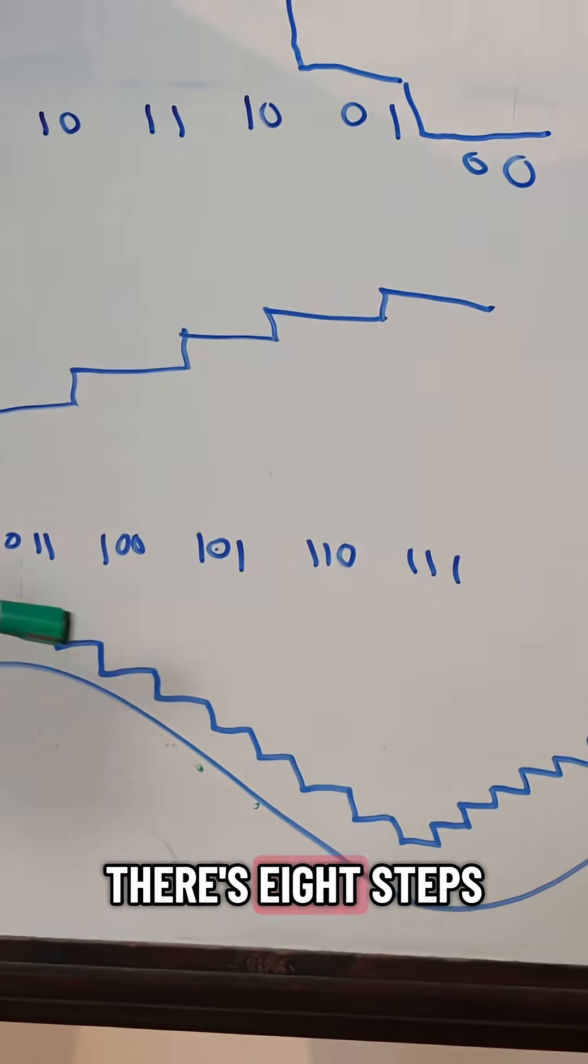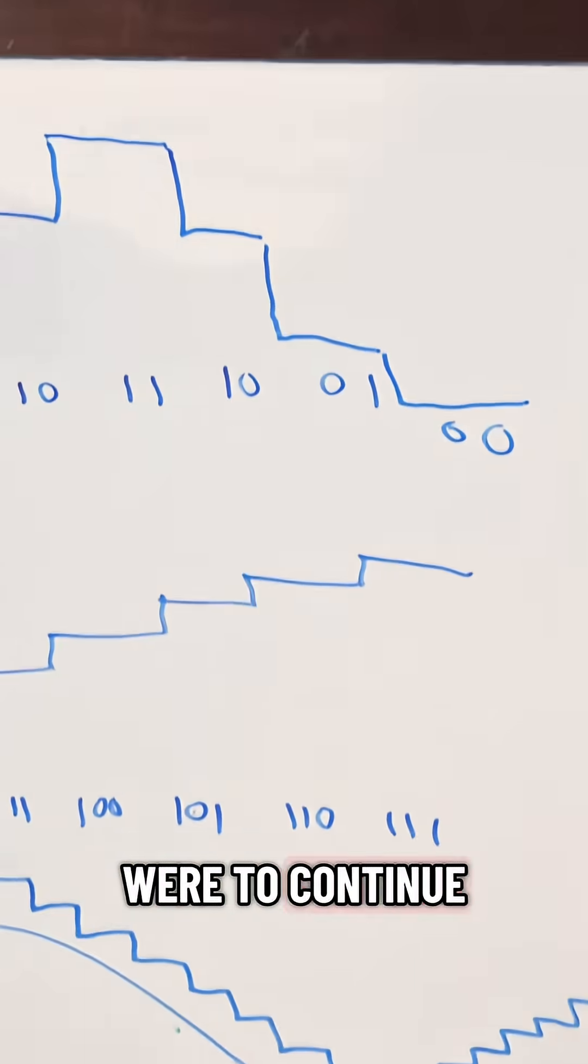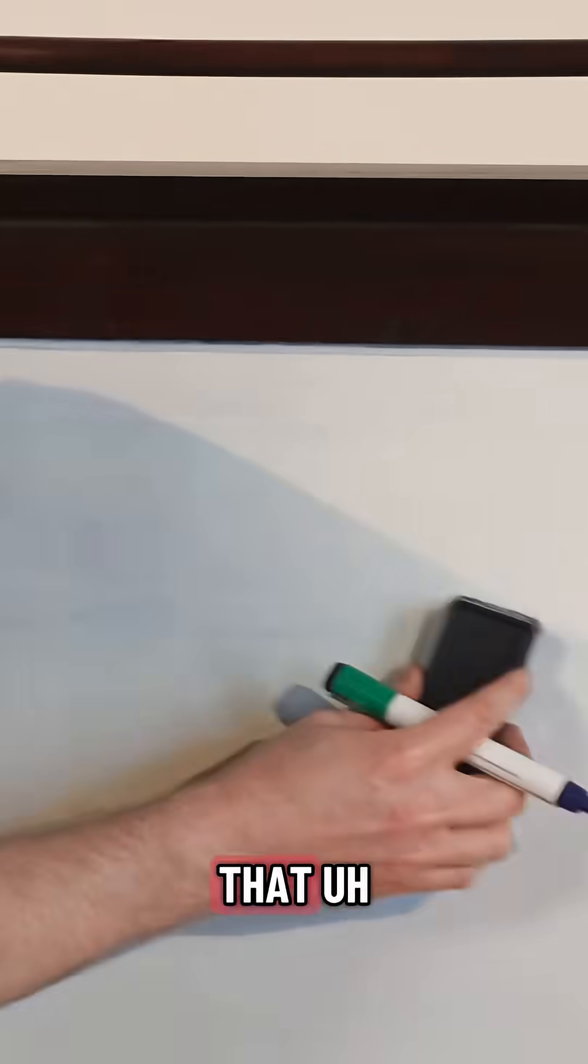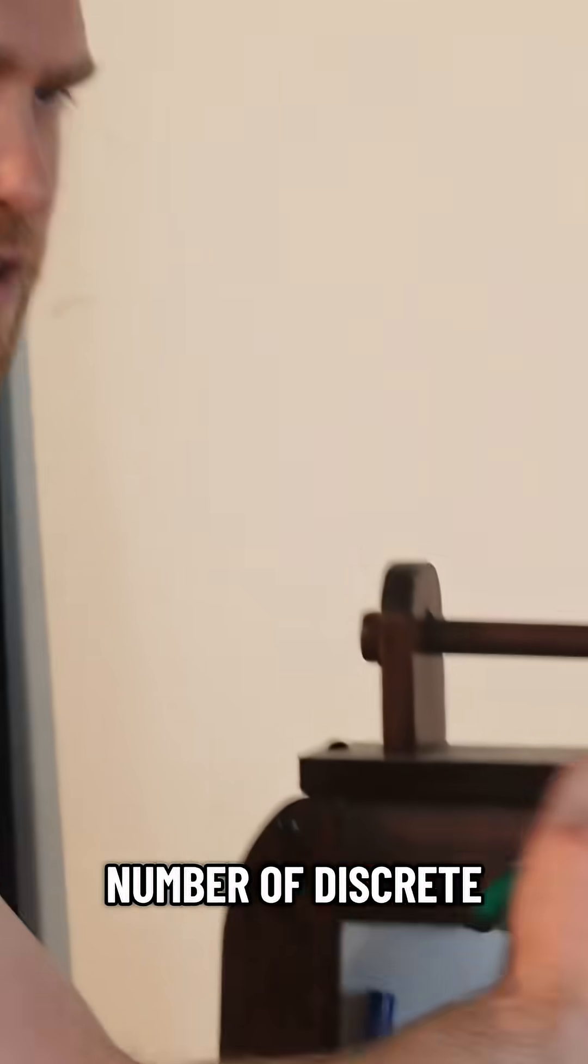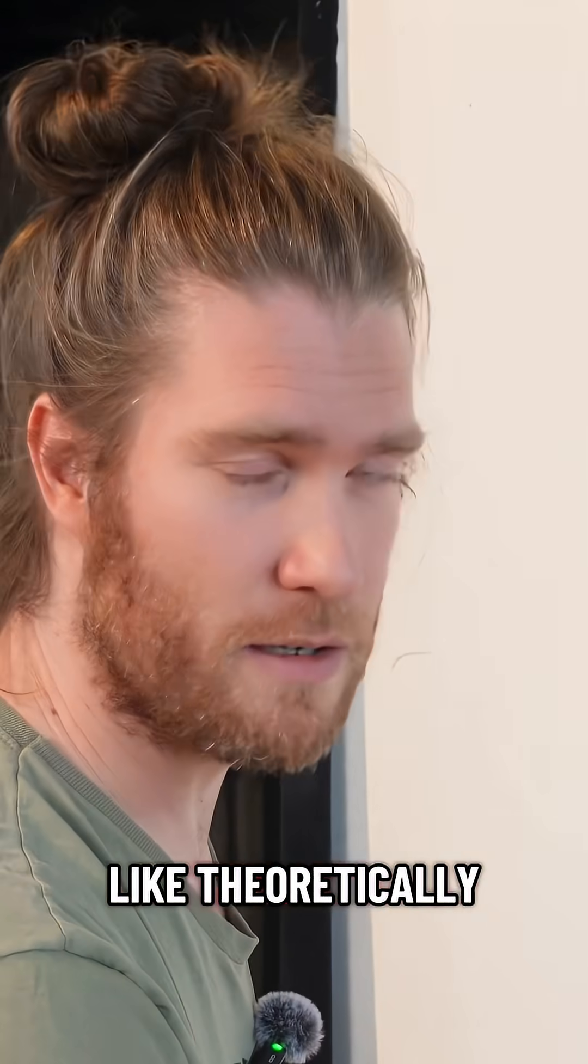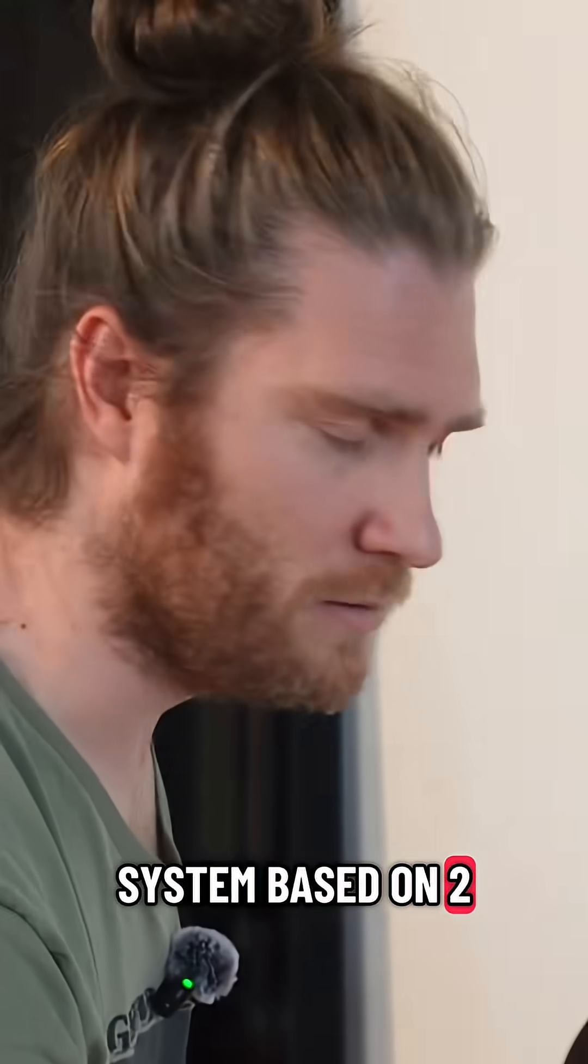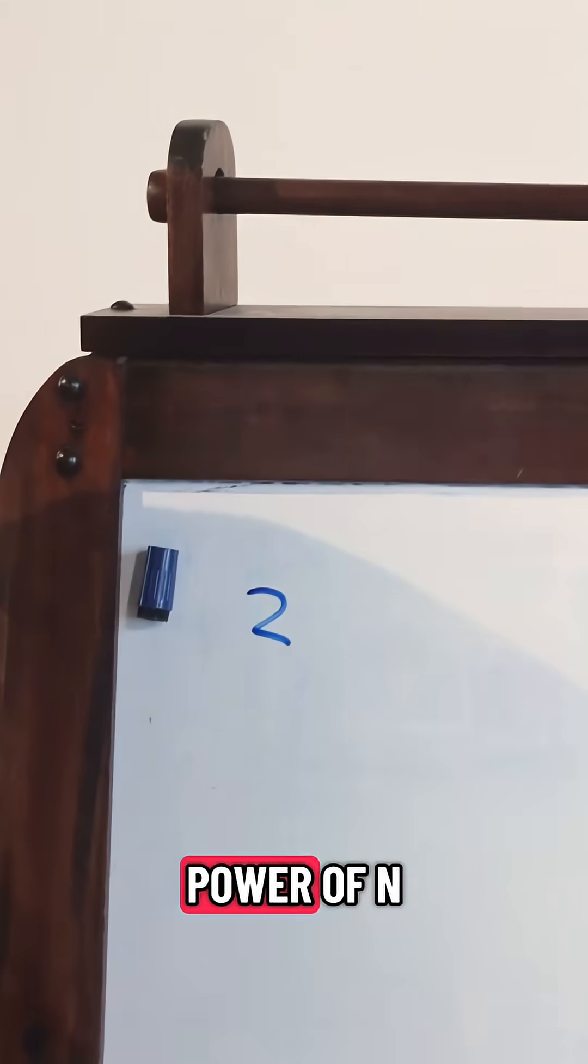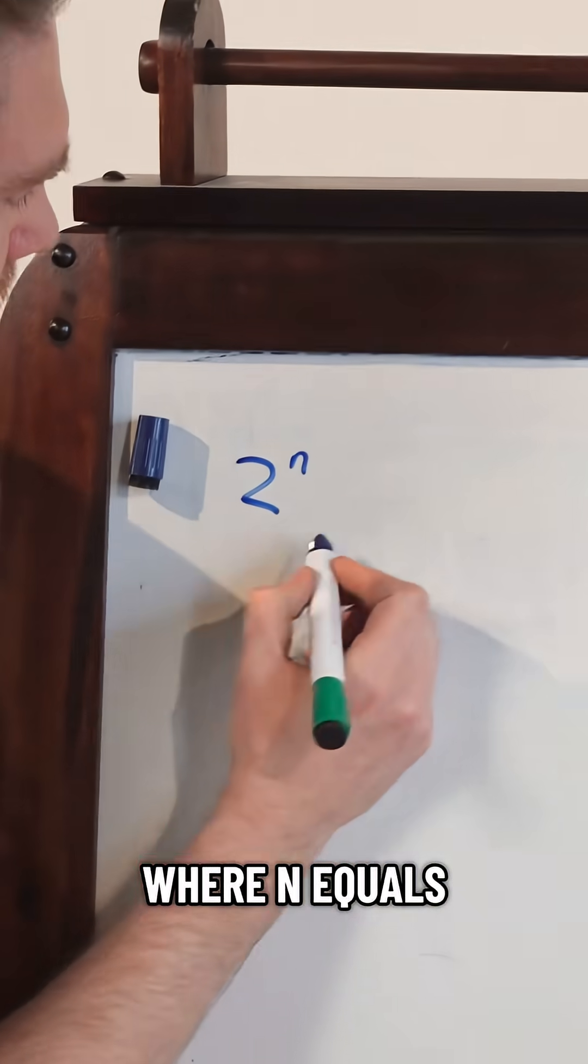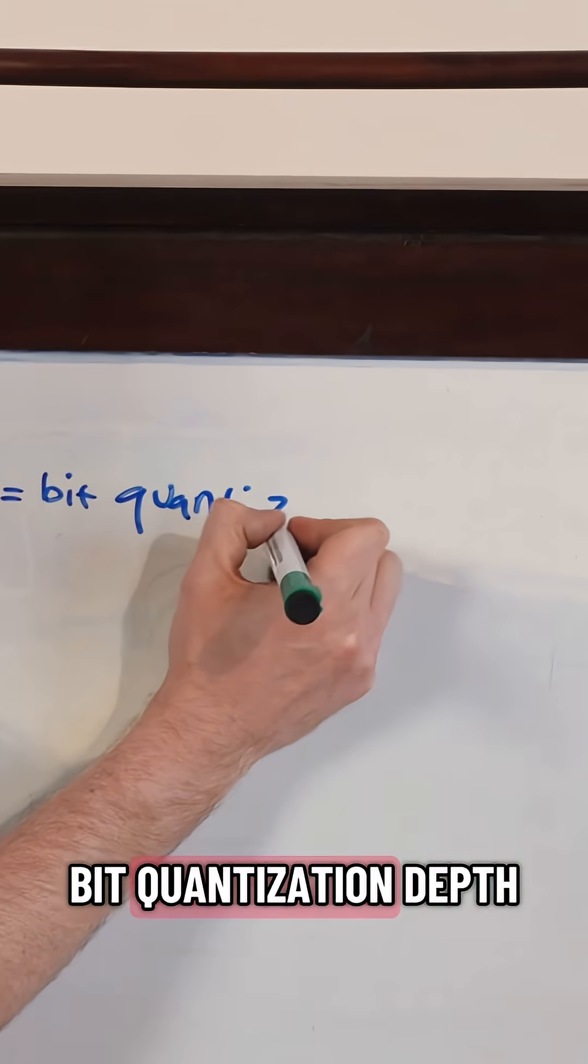Three bits, there's eight steps between off and full scale. And if you were to continue doing the math, you would find that the number of discrete steps from zero decibels to full scale is, since we're dealing with a number system based on two, it's going to be two to the power of n, where n equals bit quantization depth.